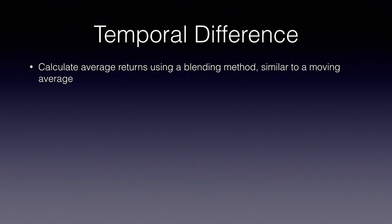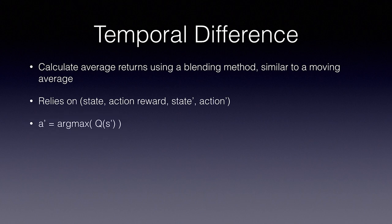It relies on state, action, reward, state prime, action prime. Now, we don't have action prime, but we calculate it with the argmax of our queue table for state prime. Alpha is a hyperparameter, which represents our learning rate, or how large our queue table updates will be each step. Each step of the game, we update our queue table in place by blending our actual returns with the previous value using a hyperparameter called alpha, which represents the learning rate.